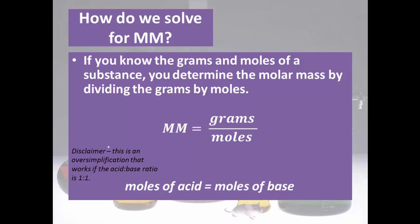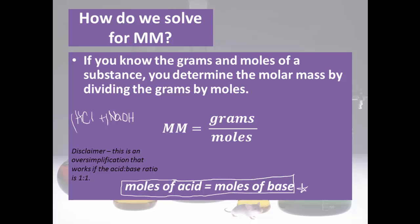A disclaimer: this is a slight oversimplification. It works for pre-AP and most of AP chemistry, but we can only make this assumption if the acid-to-base ratio is one to one — for instance, HCl and NaOH, which balance to a 1:1 ratio. In that case, we assume moles of acid equals moles of base. All the examples we'll work through today satisfy this condition. So essentially, we titrate the acid with a base and measure the volume and molarity of the base.